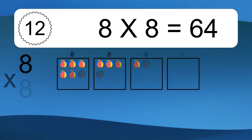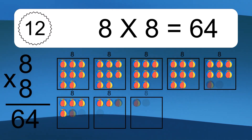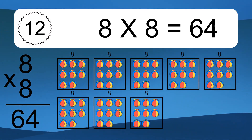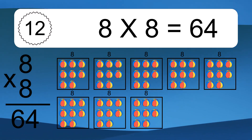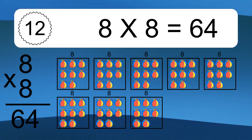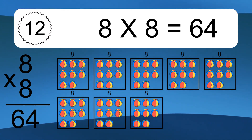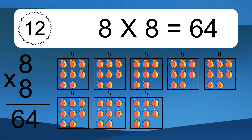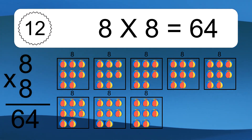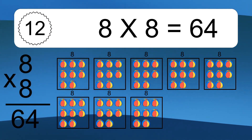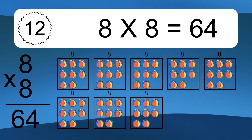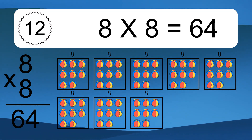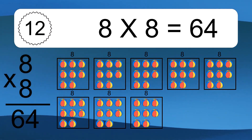8 times 8 equals 64. We have 8 boxes and each box has 8 colorful balls inside. If you count all the balls in all the boxes together, you will have 8 times 8 balls. This equals 64 balls.